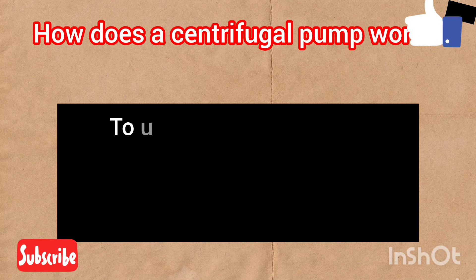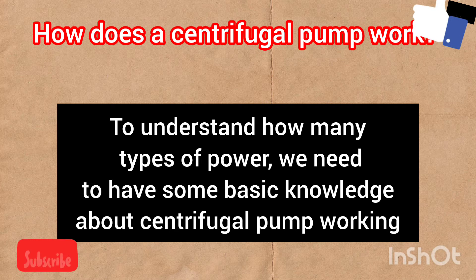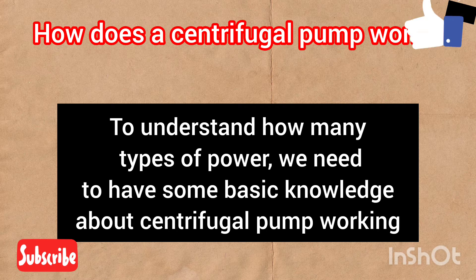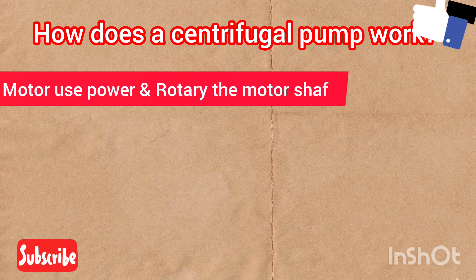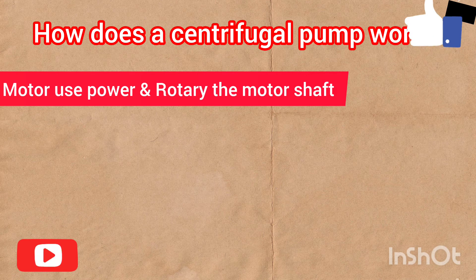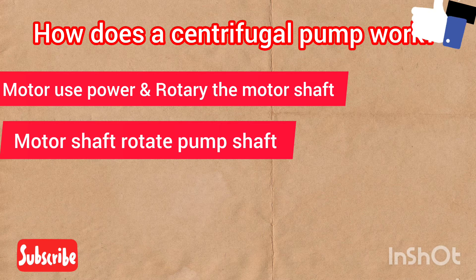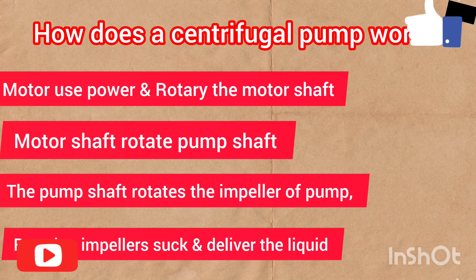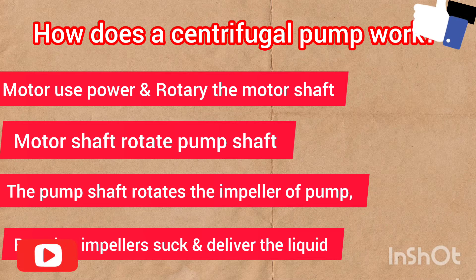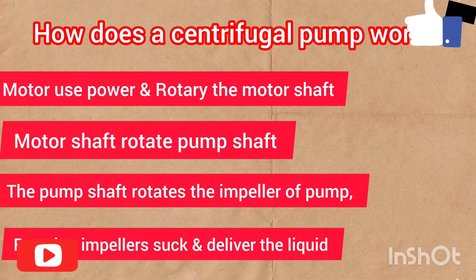If you don't have an idea about how a centrifugal pump works, then it is very difficult to understand hydraulic power and BKW power. So let's discuss the working first. When we start the motor, the motor uses power and rotates its shaft. The motor shaft rotates the pump shaft, and the pump shaft rotates the impeller. The rotating impeller creates a centrifugal force and sucks the liquid from the suction side and discharges to a certain height as per the process.